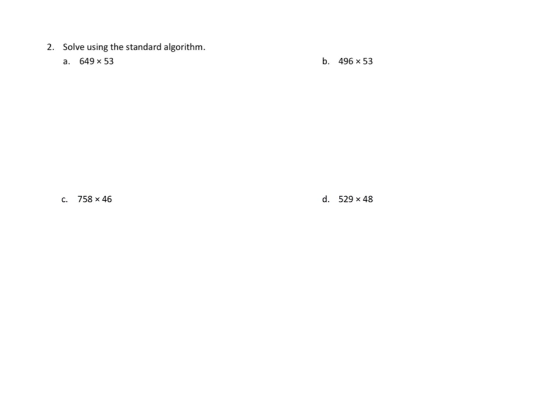Let's take a look at another problem. Problem number two. Problem number two says solve using a standard algorithm. I'm going to do 2b. 2b we're asked to multiply 496 times 53. So I'm going to go ahead and set that up over here, 496 times 53.